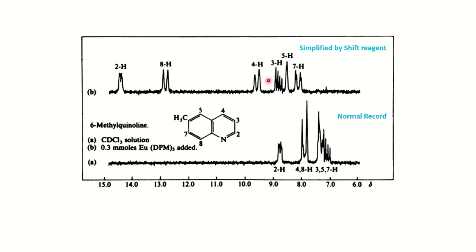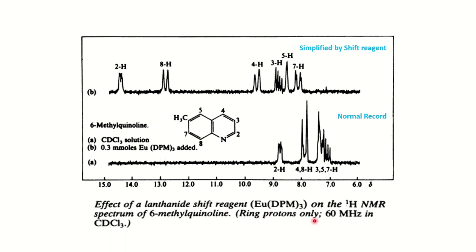Note that the lanthanide reagent is working on the 60 MHz instrument — both spectra are recorded at 60 MHz. The same result you would get by enhancing the resolution from 60 to 500 MHz NMR. So if you don't have a 500 MHz NMR, you can simplify the spectrum to first order on the same instrument using the lanthanide shift reagent. Now with respect to the chemical shift values, you can identify each peak.